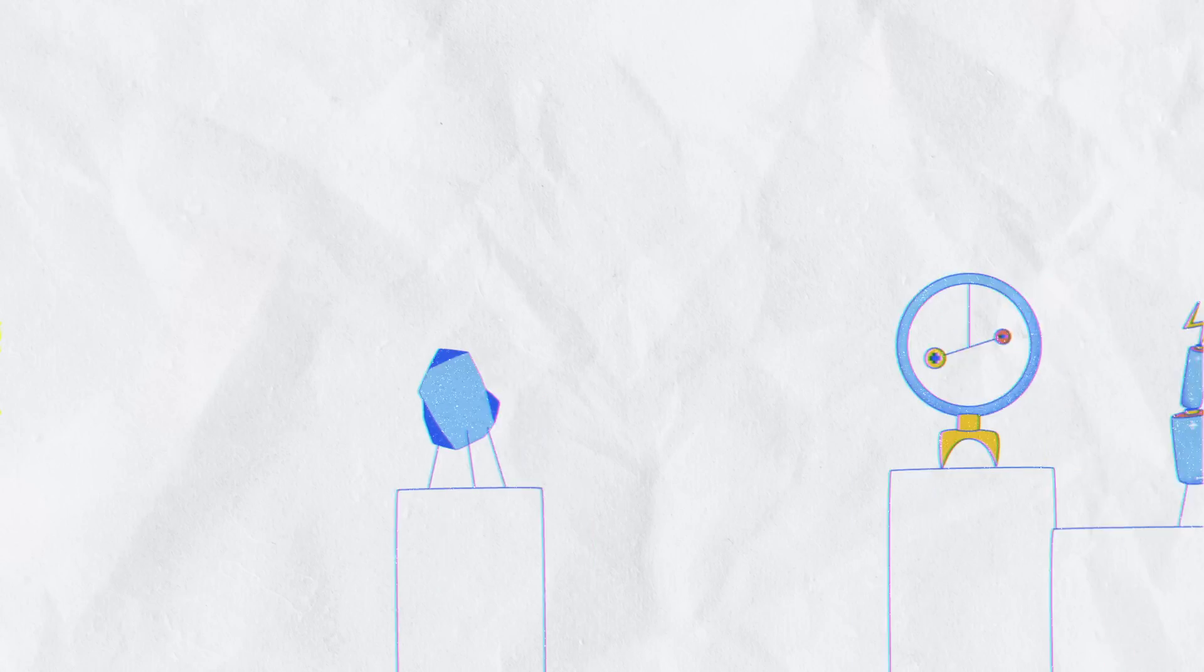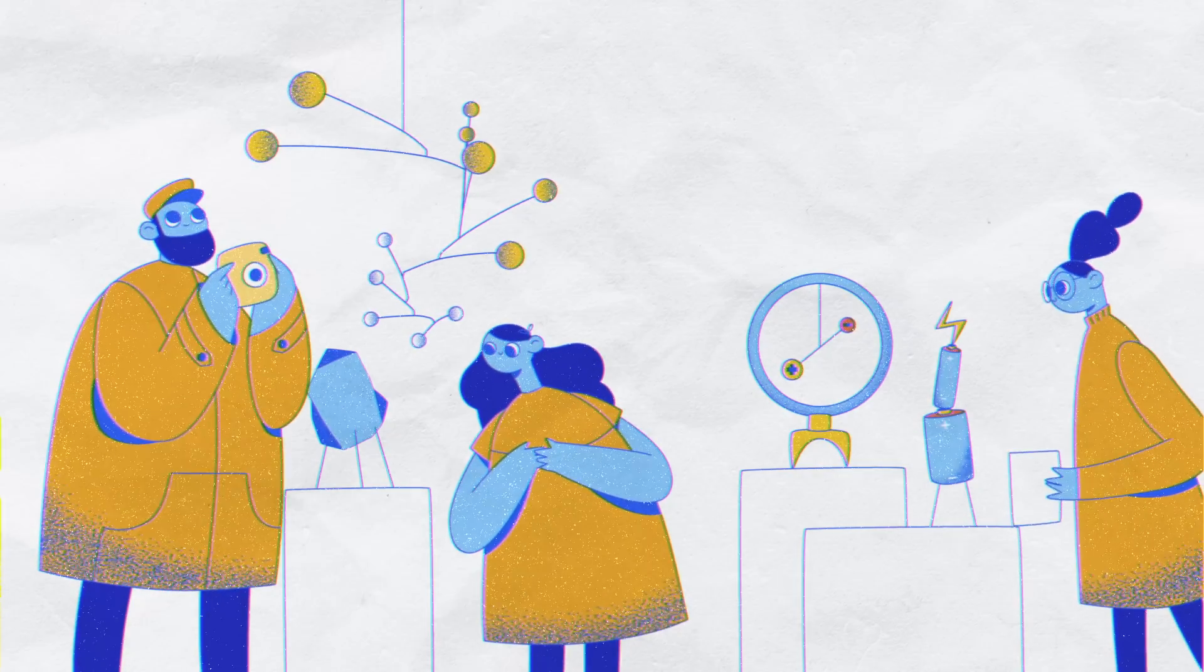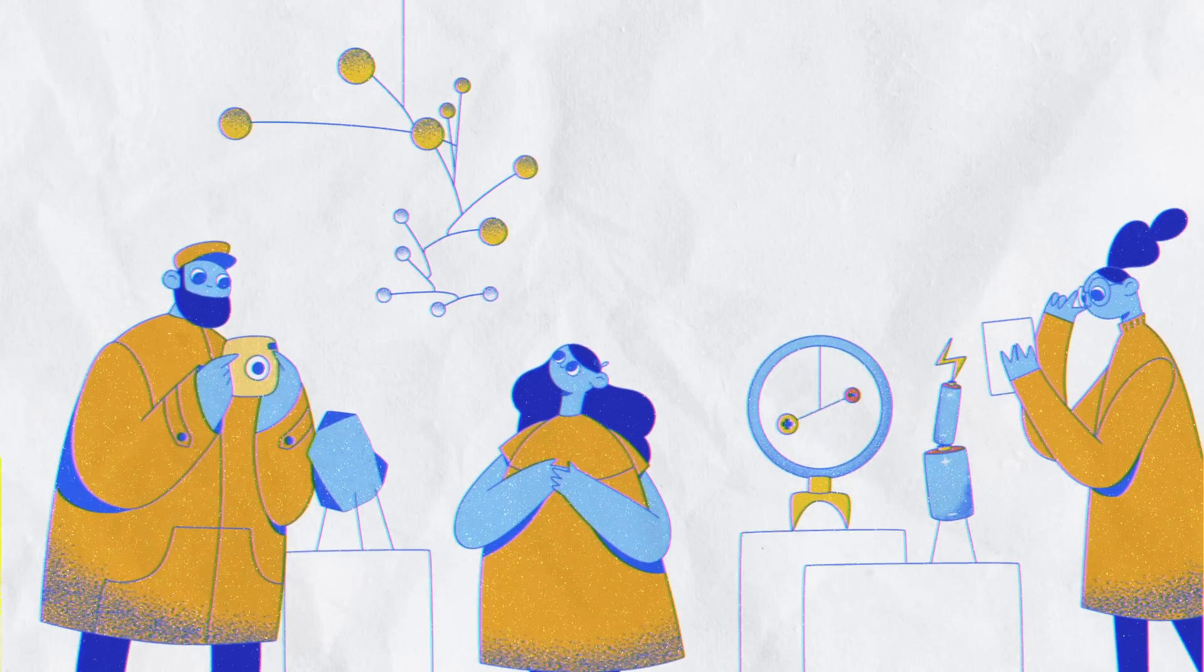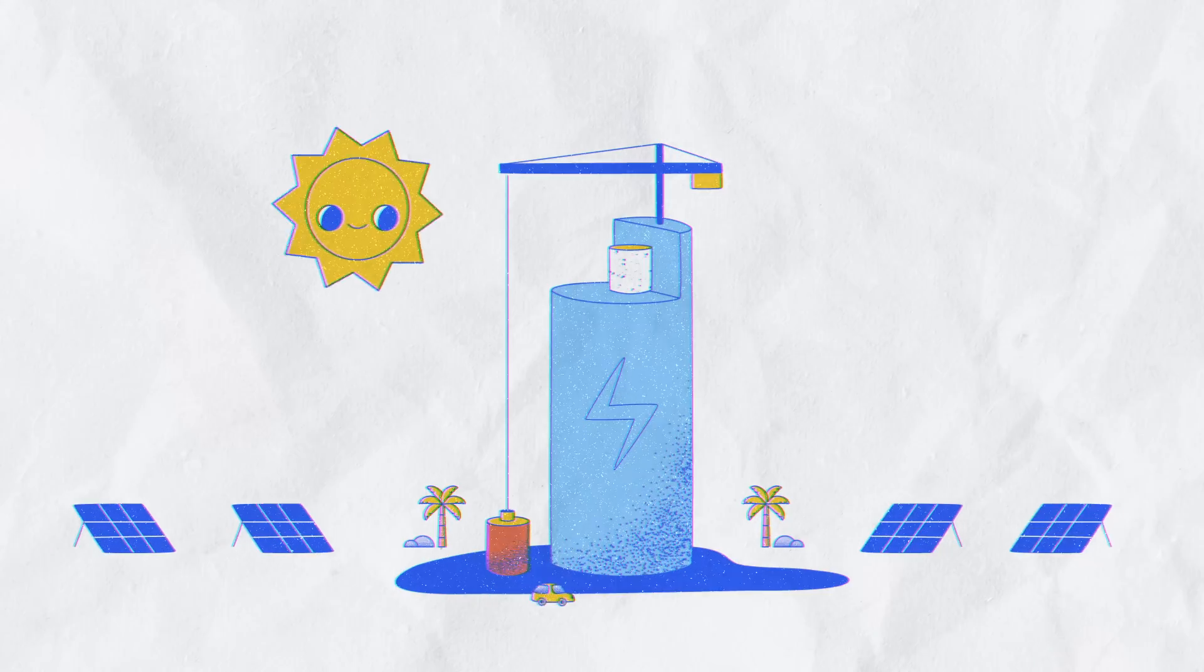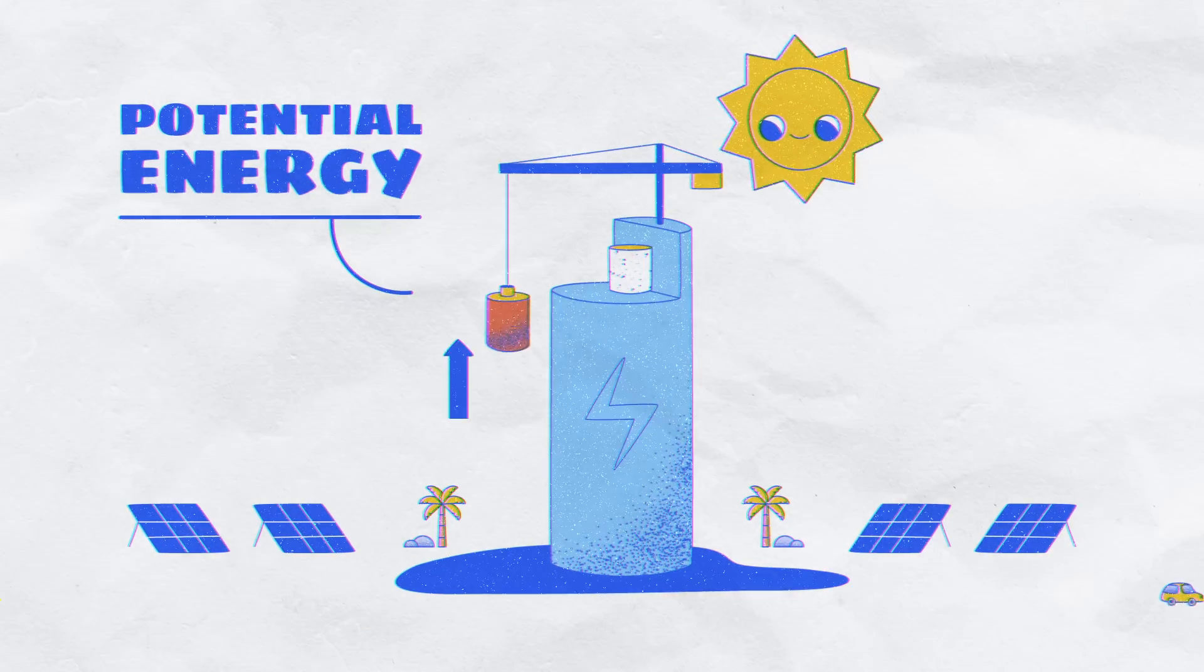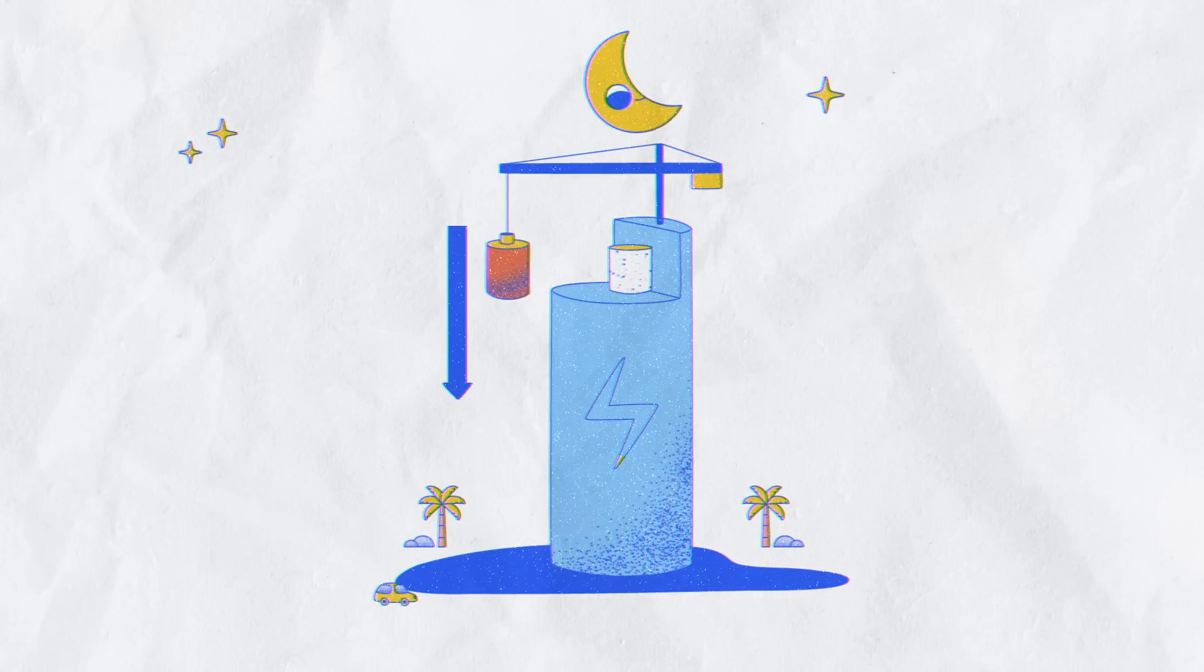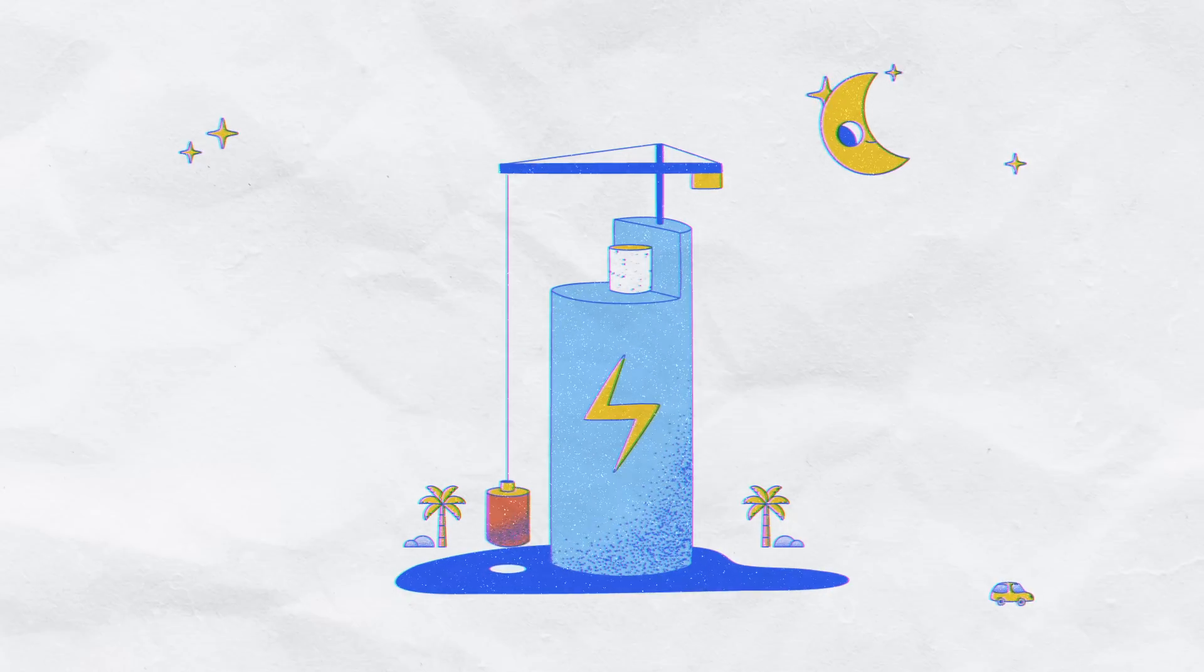Inventors all over the world are rising to the challenge of making batteries that can meet our needs, many of them even weirder than the two lakes. One company is building a skyscraper battery. When the sun is shining, a crane, powered by solar energy, piles blocks on top of each other in a tower. At night, the cranes let gravity pull the blocks down and use the resulting power to spin generators.